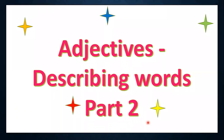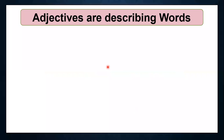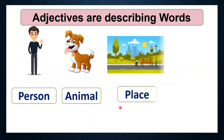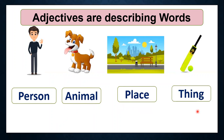So yesterday we learned that adjectives are the words that describe a person, animal, place or thing. Yesterday we learned adjectives — the words related to size, shape and color.